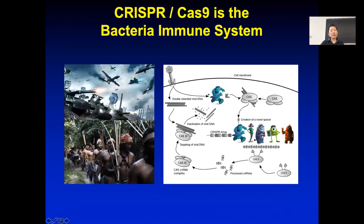The first virus that went in left a copy of its unique DNA. Then a second virus came in, it kept track of that, the third virus, the fourth virus—and the newest virus is always inserted at the beginning of this repeat sequence. So you can actually see the order of infection.